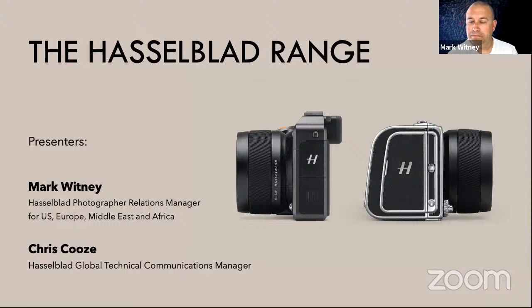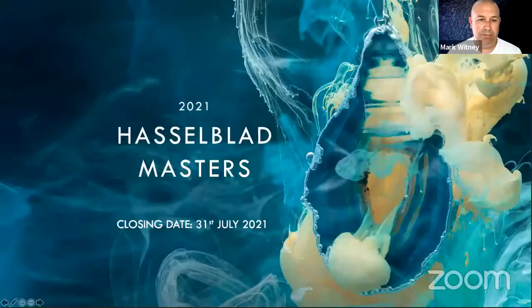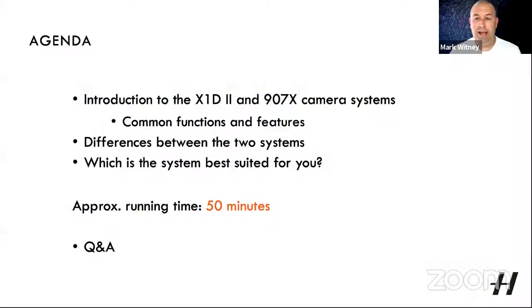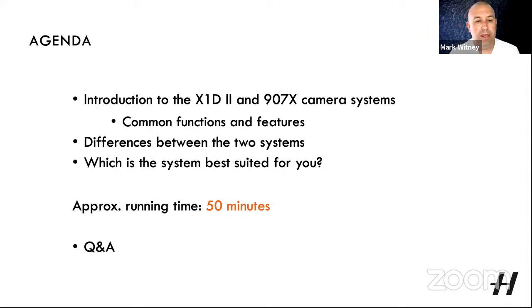So Chris, hi, how are you? Hi Mark, yeah, good, thank you. Ready to go. I've just got a few screens to go through before Chris gets on with the main presentation. A quick shout out for the Hasselblad Masters — our competition is currently open until the end of July, so if you're interested in entering, please head over to the Hasselblad website and submit your entries. Today's agenda covers an introduction to the X1D2 and 907X, common functionalities and features, differences between the two systems, and finally what criteria suggests which camera is best for you. We estimate around 50 minutes, leaving time for Q&A.